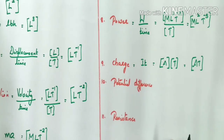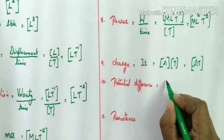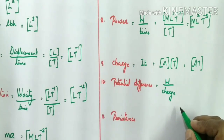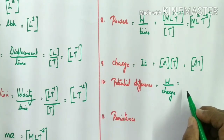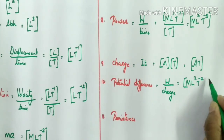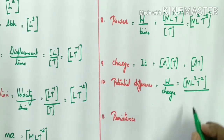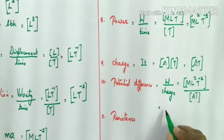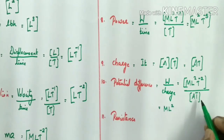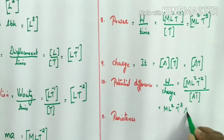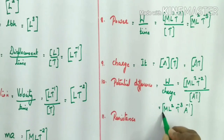Now we can write the dimensional formula for potential difference, or voltage. The formula is work done divided by charge: V = W/Q. The dimensional formula for work is [ML²T⁻²] and for charge is [AT]. Dividing, T from the denominator becomes T⁻¹ combined with T⁻² gives T⁻³, and A in the denominator becomes A⁻¹. So the dimensional formula for potential difference is [ML²T⁻³A⁻¹].